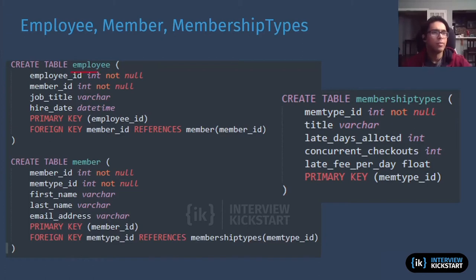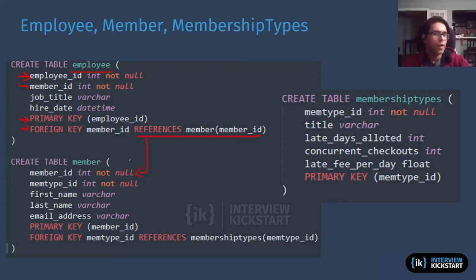If we start with the employee table here, you see our primary key is going to be the employee ID. Typically you'd have that as your first column, the first attribute named in the DDL statement, then you actually make it a primary key. Then our member ID, which is going to be our foreign key. You can see the referential integrity being notated here, where it's going to be referring to the primary key of the member table. That's sort of how you would join those two tables when they're going to be used.